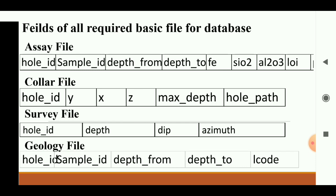The hole path field is for deviation. We maintain the hole path for deviated holes — if any hole deviates from its path, we record the path of that hole. For the survey file, the fields are: hole ID, depth, dip, and azimuth. For the geology file, the fields are: hole ID, sample ID, depth from, depth to, and lithology code (L code). The L code is assigned as per the lithology — for example, 1, 2, 3, 4, 5 for different lithologies. Sample ID is not mandatory in the geology file either.